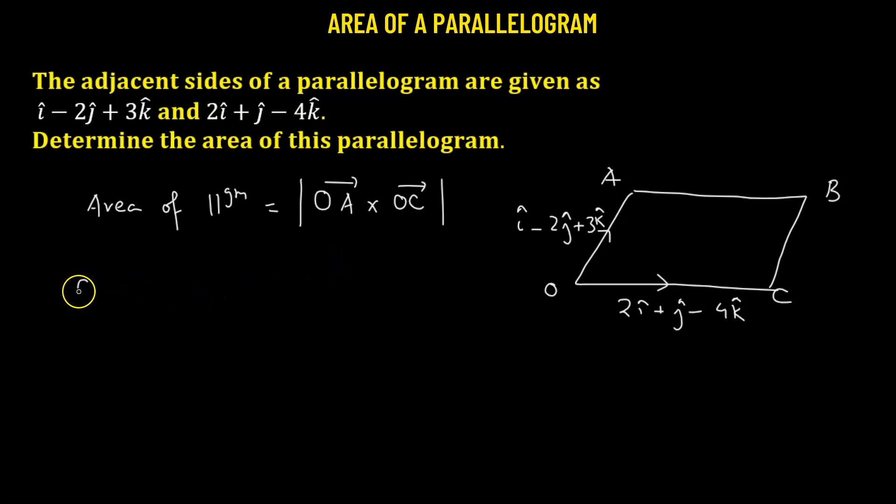So first we will find out the cross product between the two edge vectors. So we have OA vector crossed with OC vector. We'll consider a 3 by 3 determinant. So in the first row, we have the unit vectors i cap, j cap, k cap.